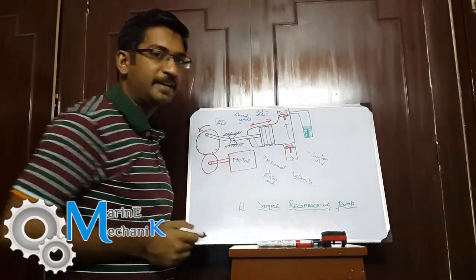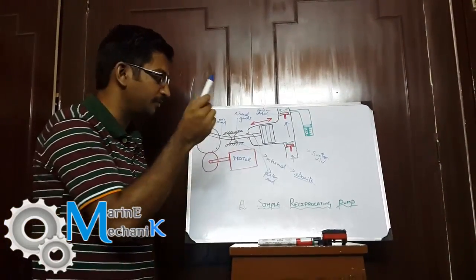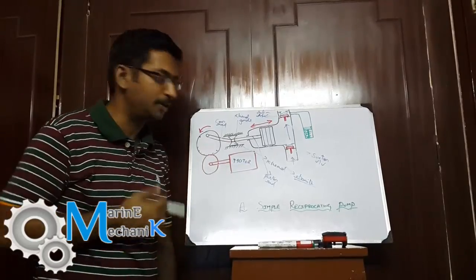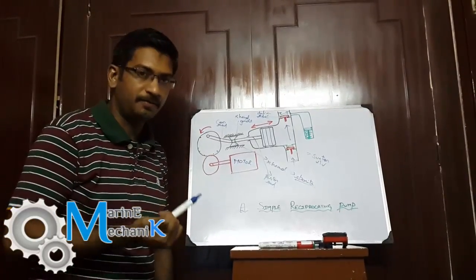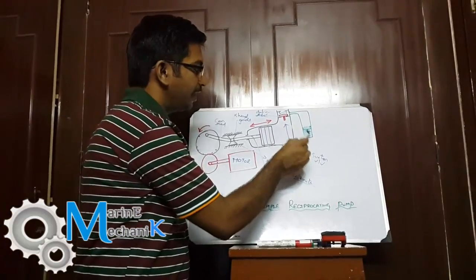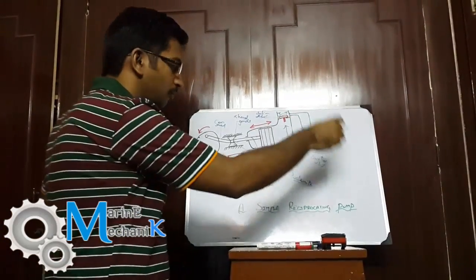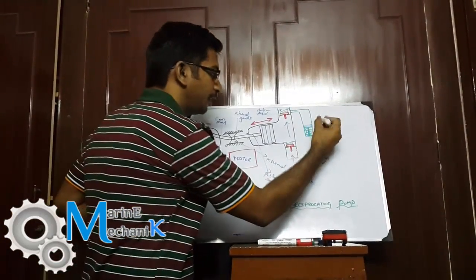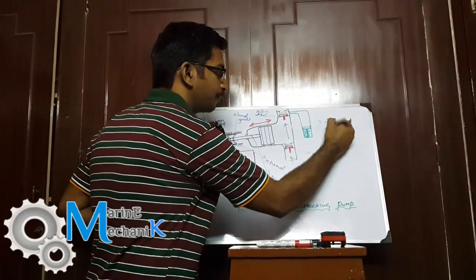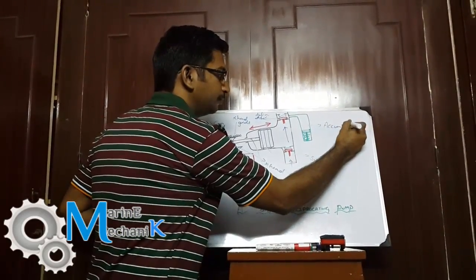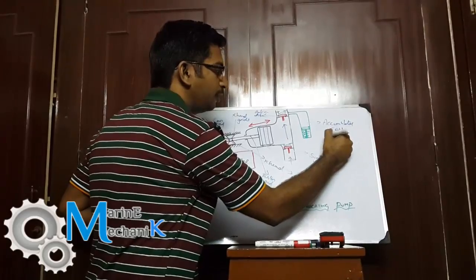This is one of the failing mistakes what the surveyor expects if he asks you to draw a reciprocating bilge pump in front of him. On the discharge side, this is the accumulator or air vessel.